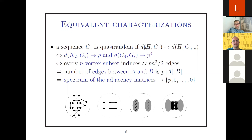If a sequence of graphs satisfies the first property, it satisfies all the others, and vice versa. A final equivalent property is related to the spectrum of adjacency matrices. If I get a large Erdős–Rényi random graph, the largest eigenvalue normalized by n will be p, and all other eigenvalues will be sublinear — essentially zero after normalization. This spectral property is equivalent to all four previous properties.